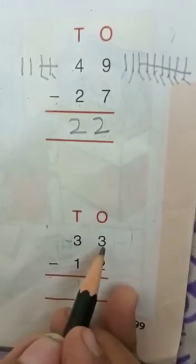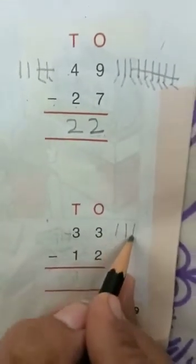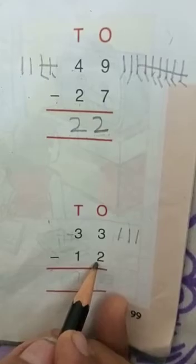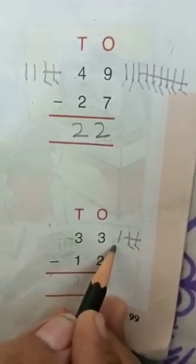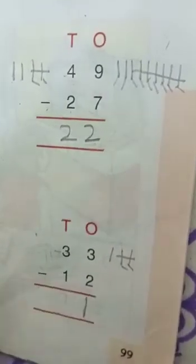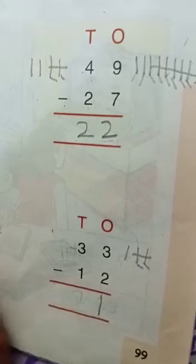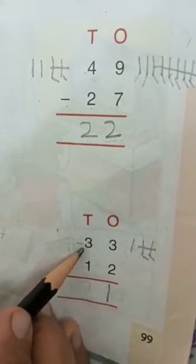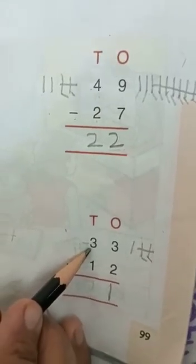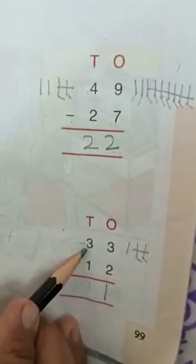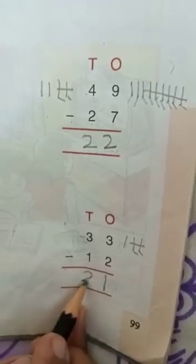Next: 33 minus 12. Three ones — one, two, three — we have to take away two: one, two. How many lines are left? One. We write one here. Now three minus one — we will not draw lines. What number comes before three? Two. We have to take away one, so let's take away — what number comes before three? Two. The answer is 21.